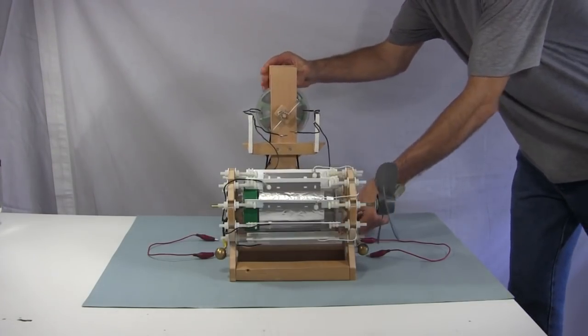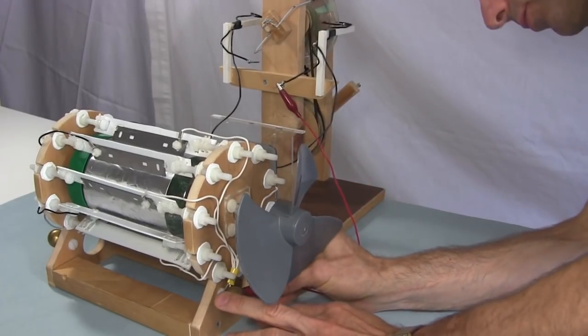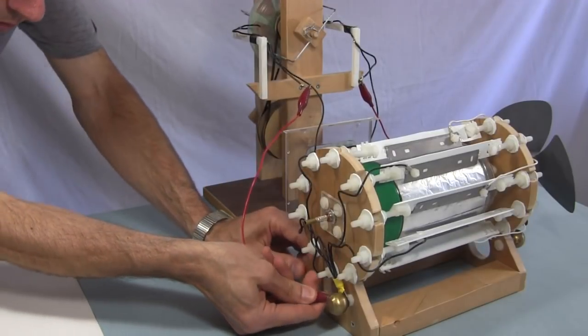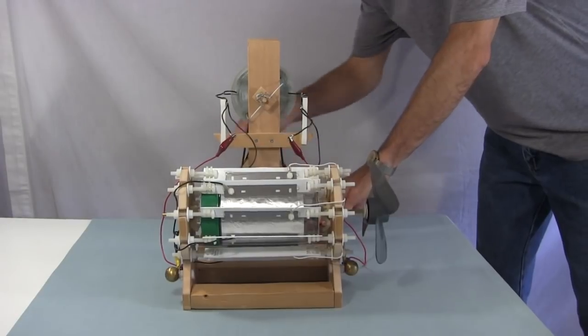Like with my homemade Wimshurst machine, I connect one end that previously went to the Wimshurst spark gap to one set of electrodes, and I connect the other end of the spark gap to the other set of electrodes. When I crank the Wimshurst machine, the Corona motor starts turning.